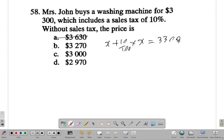This amounts to: x is 1x plus 10 over 100 is 0.1x equal 3300. 1x plus 0.1x is 1.1x equal 3300.